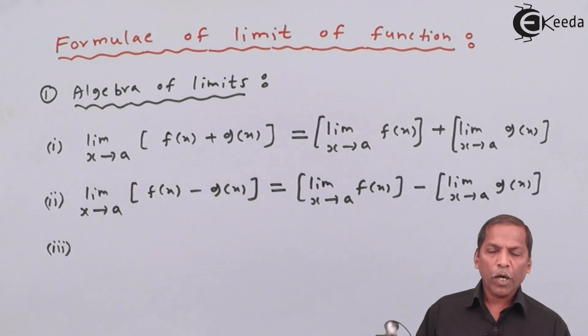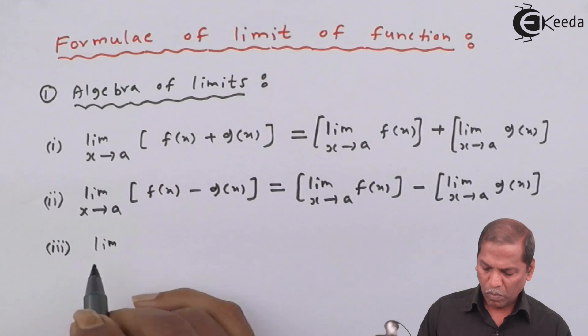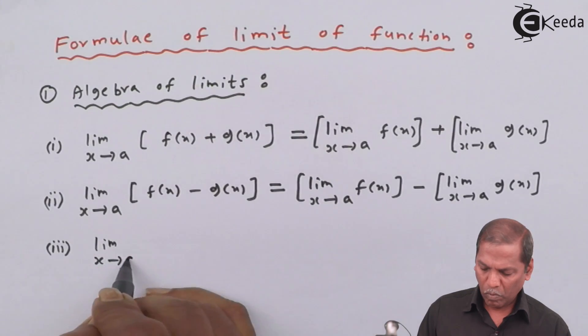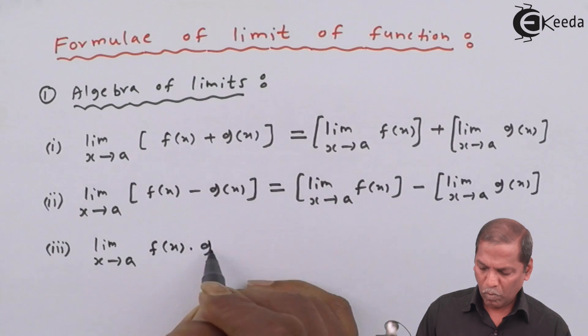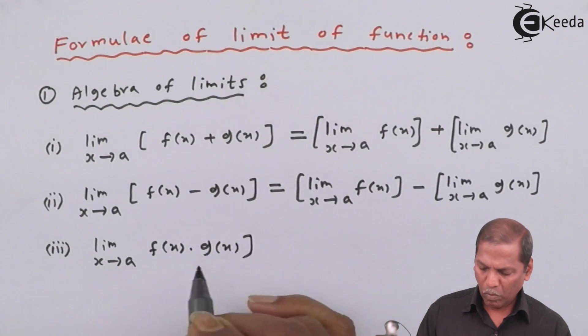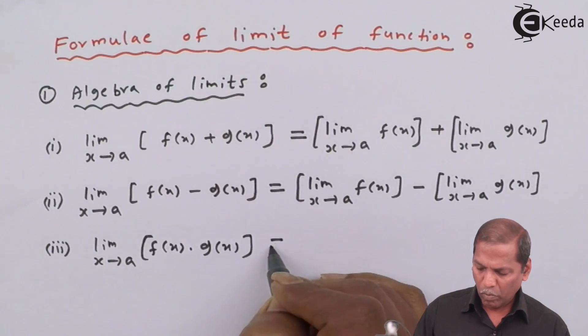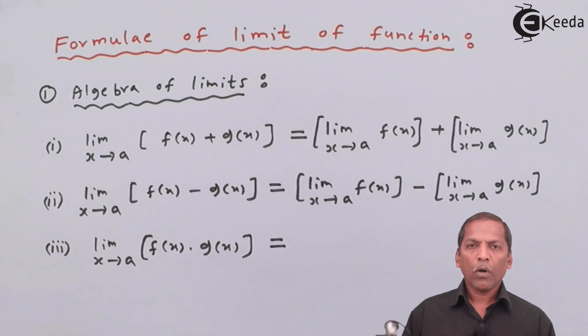Number 3: limit x tends to a in bracket f of x into g of x bracket complete, that equal to limit x tends to a f of x into limit x tends to a g of x.